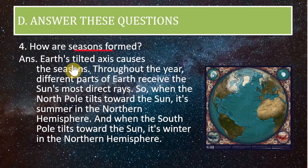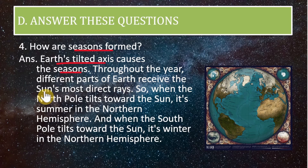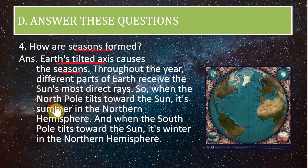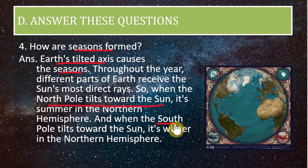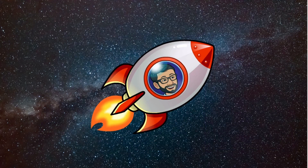Last question: how are seasons formed? The earth's tilted axis causes the seasons throughout the year. Different parts of the earth receive the sun's most direct rays at different times — when the North Pole tilts towards the sun it is summer in the northern hemisphere, and when the South Pole tilts towards the sun it is winter in the northern hemisphere. Thank you for attending this session, see you next time. Take care, bye bye.